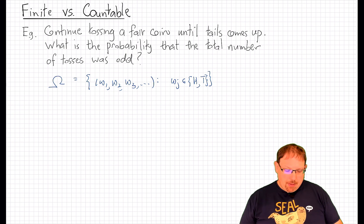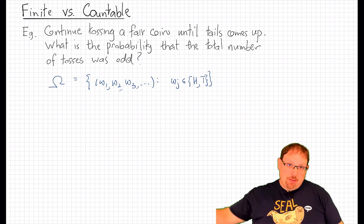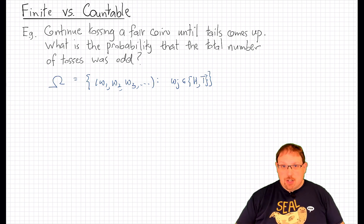In this example here, I'm going to stop tossing once I reach tails. But the sample space contains continued sequences of tosses afterward. That's okay. We just ignore those when we're calculating probabilities.